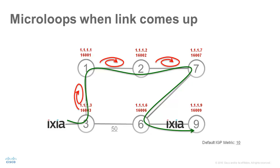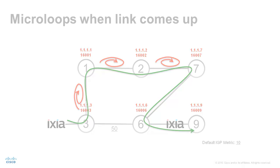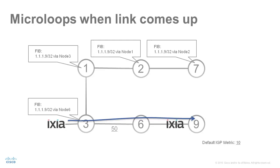Depending on the convergence order of the different nodes in the topology, microloops can occur on the indicated links. The FIB entry for the loopback prefix of node 9, 1.1.1.9/32, is indicated next to the nodes.